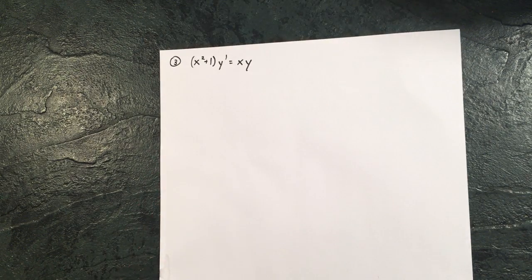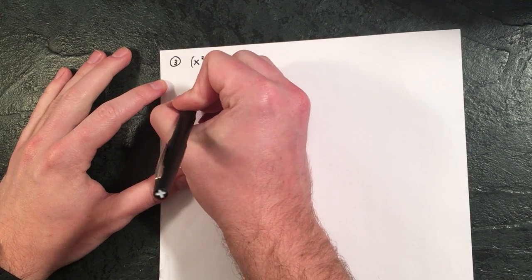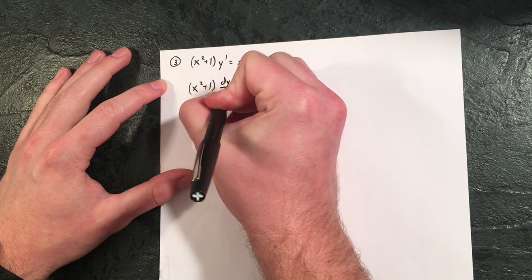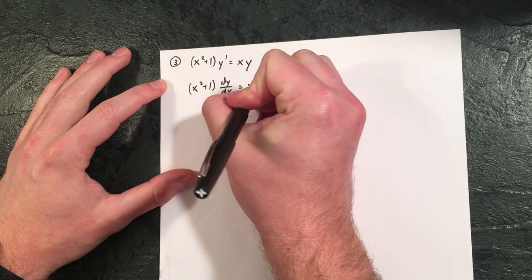Okay, let's do one more here. The last one that I thought was tricky was number three, which doesn't have an initial condition to solve for, but I think once we separate, actually solving the integral here is a little bit trickier. The other issue is it's written as y prime, so my first step would be let's make that dy over dx.